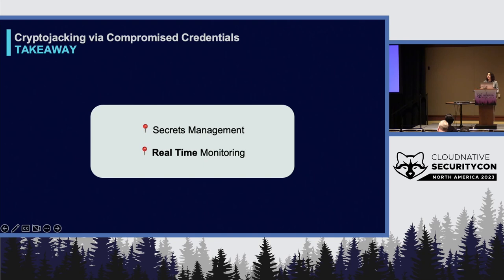In this specific attack, Expel was able to pick up on a few things in their real-time monitoring. They detected that SSH keys were being generated from a suspicious IP address — one that had never been used in the environment before — and that these instances were communicating with a known cryptocurrency server. Those are examples of the kinds of monitoring you should have in your environment.